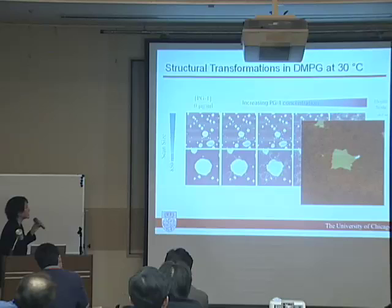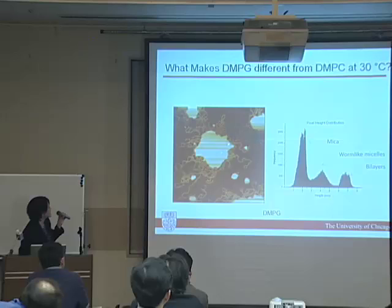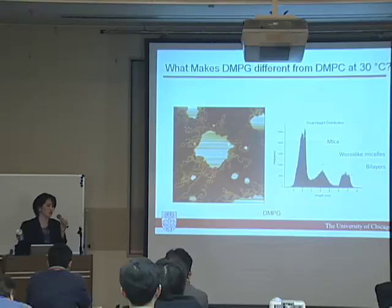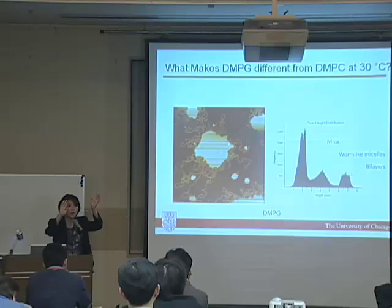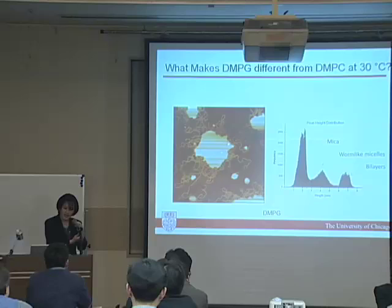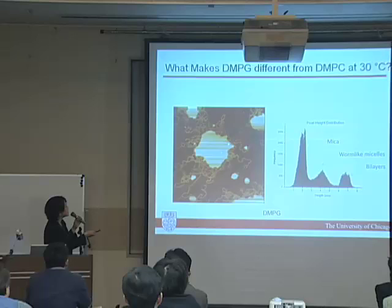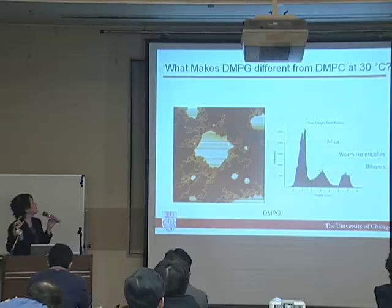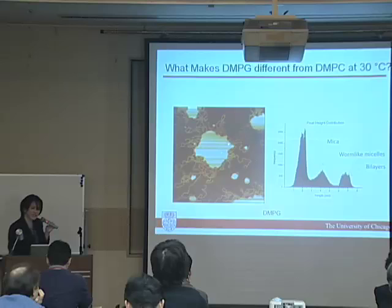In order to understand what's happening in this system, the only thing we can think of that is different between the two is that in this particular case, it might be in a more gel-like phase, making it harder to penetrate. What I mean by gel phase is that when the lipid tails are in their fluid phase, their tails are tilted. And in the gel phase, the tails are more upright. If this is true, then the effective thickness of the bilayer should be higher. And indeed, that is the case when we do a line scan — we see this is the bare mica surface and this is the bilayer. This particular system, even though it has the same number of hydrophobic tails, is actually on the order of 9 angstroms thicker than the other case, suggesting that it is indeed in a different phase state. And by having a different phase state, it makes a big difference in terms of the capability of the antimicrobial peptide to penetrate into the system.